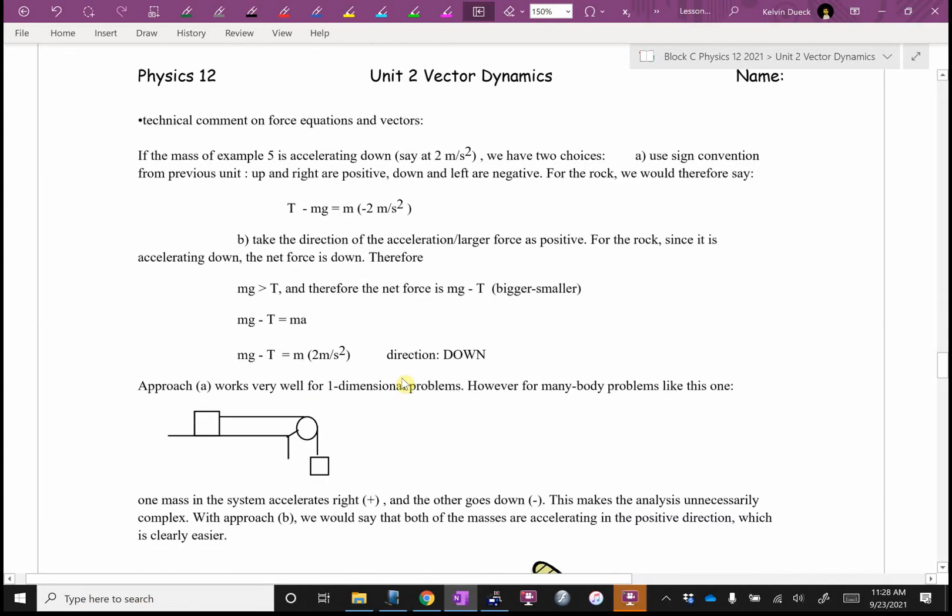So, a little technical comment on forces and vectors. If the mass of example five, the rock is accelerating down, we have two choices. We could let down be negative and up be positive, but I think I convinced you last year, it was much easier. Instead of always saying that down was negative or left was negative, let positive be whichever way is winning. It's much easier just to think that way.